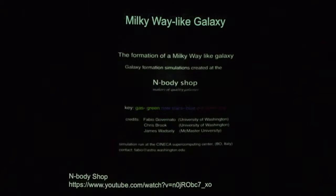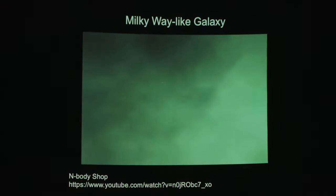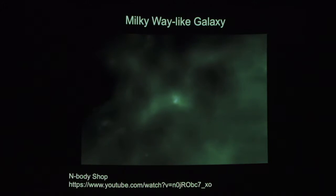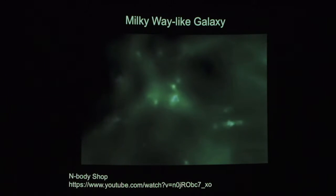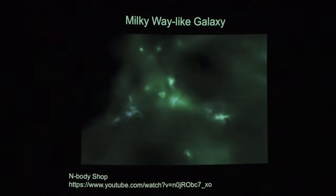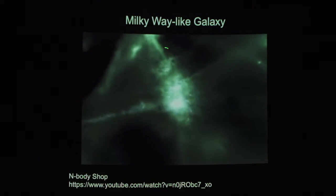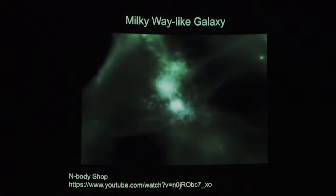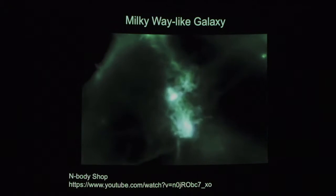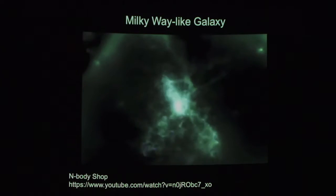I am going to go back to showing a simulation, in this case that of the Milky Way. This is the third time we've seen this, so it should be familiar. Now we're going to see more stars. The bluish light corresponds to where stars are forming, and the greenish light corresponds to just the gas.